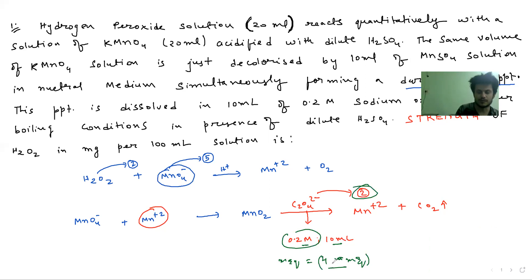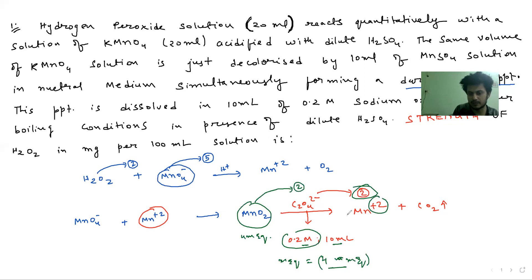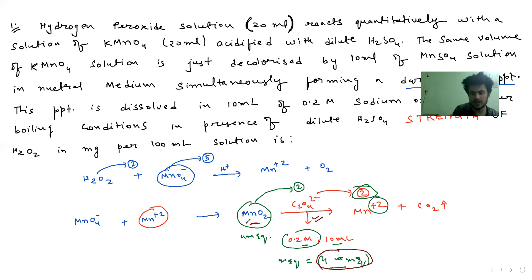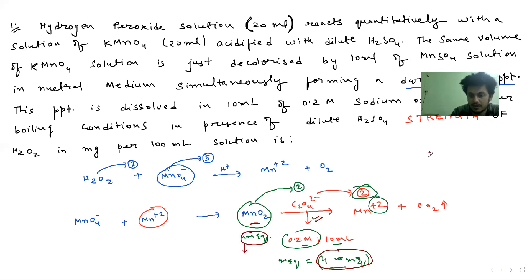We use 4 millimoles here. MnO2 equivalents — how many MnO2 equivalents are here? MnO2 is being formed from this reaction, so the equivalents must be equal. The n-factor relationship: equivalent equals moles into n-factor.